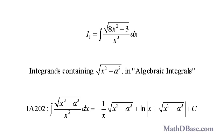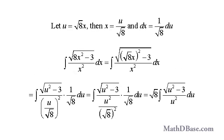For example, we can use the table to calculate integral 1. The integral in the table that looks most like this one is entry IA202, found in integrands containing the square root of x squared minus a squared in the algebraic integrals category. The main parts of the integrand of integral 1 are similar to those in IA202.